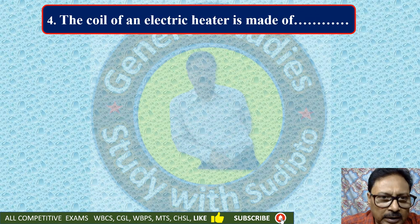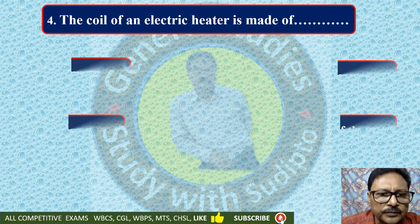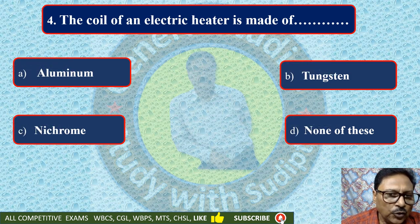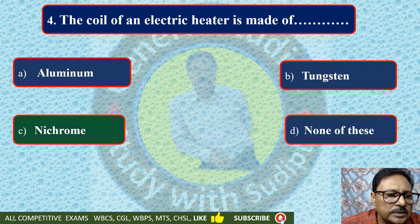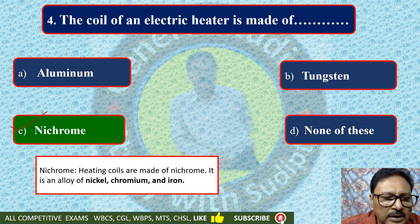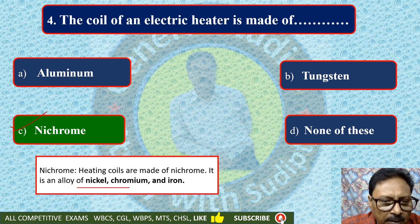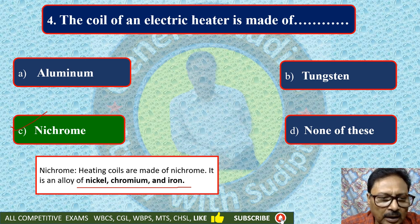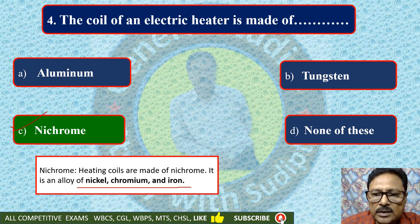The coil of an electric heater is made of — aluminium, tungsten, nichrome, or none of these. Nichrome metal is used as a heating coil. Heating coils are made up of nichrome. It is an alloy of nickel, chromium and iron. Nichrome is used as an electric heater heating coil.